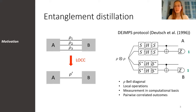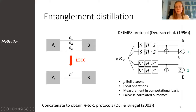The DAMES Protocol is an instance of a two-to-one distillation protocol, because we start with two states in the input and we are left with one in the output. To increase the fidelity even further, we can concatenate the DAMES Protocol. For instance, we can apply the DAMES Protocol twice to different input states, and then use the two output states in another round of the DAMES Protocol. This procedure is known as nested entanglement pumping, and it was studied by Durr and Briegel.